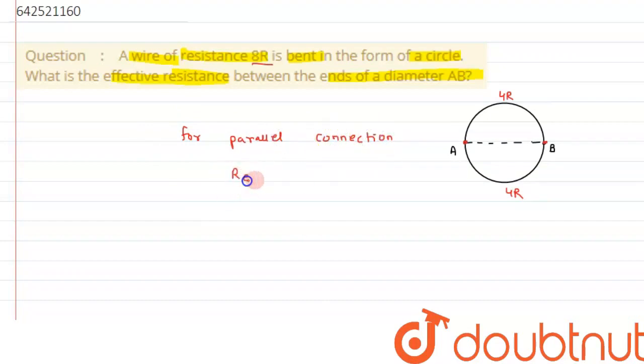For parallel connection, the effective resistance formula is given by R1 times R2 divided by R1 plus R2. We just have to substitute the values and we can get the result.